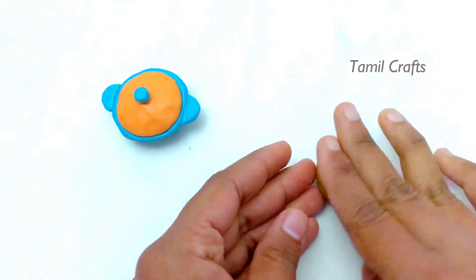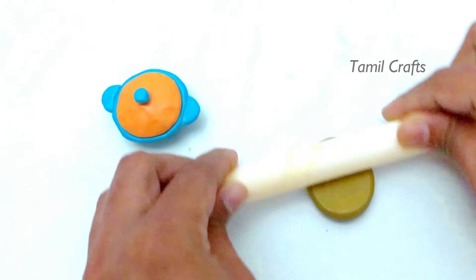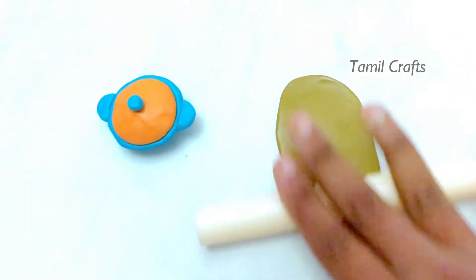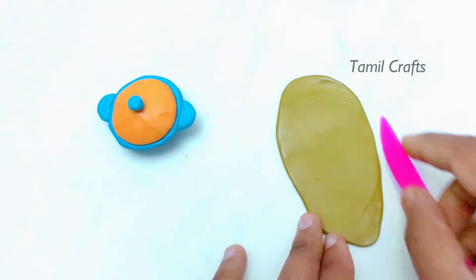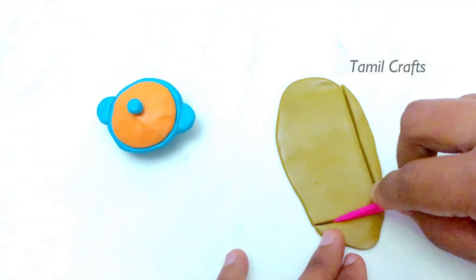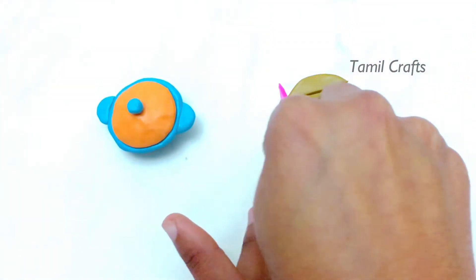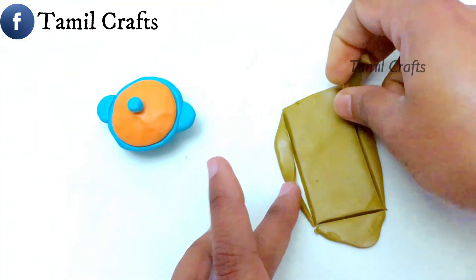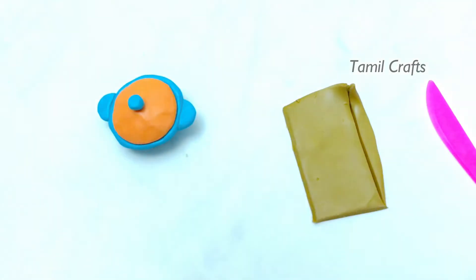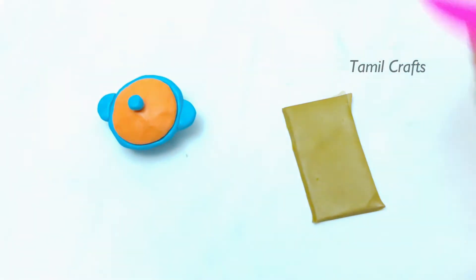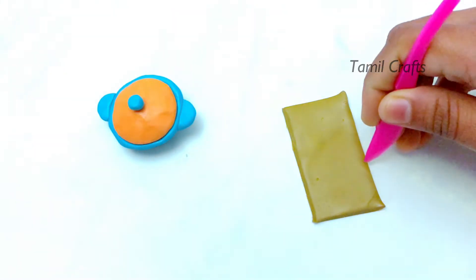I will use golden color clay. We will use this rolling pin to make it a little thick. We will cut it in a rectangle shape. We will cut it on four sides.